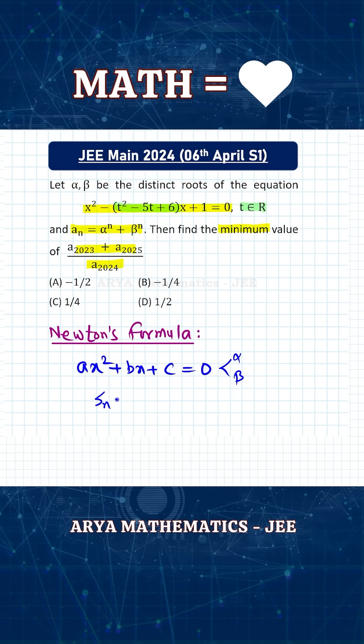Suppose if we have S_n equals to alpha raised to n plus beta raised to n, it might be either alpha raised to n plus beta raised to n or alpha raised to n minus beta raised to n. Then the Newton's formula is that a into S_n plus b into S_{n-1} plus c into S_{n-2},